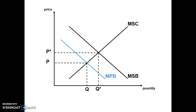Q represents the equilibrium quantity — how much of the product we actually get — while Q star is the socially efficient level society would like to see. We also draw a wedge pointing to the original equilibrium where MSC and MSB meet. That wedge represents our potential welfare gain — how much society could benefit if we closed the gap between personal benefit and societal benefit. When we remedy market failure with positive externalities of consumption, we want to minimize that wedge so that potential welfare gain becomes realized welfare gain.